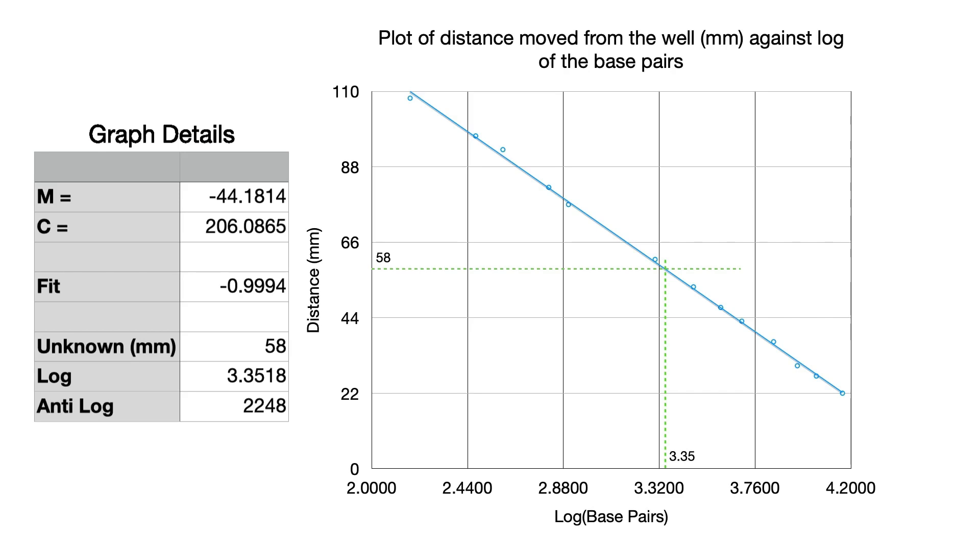So we would say that the band is 2200 base pairs because this approach isn't amazingly accurate, it's an approximation that we're getting from this type of calculation.